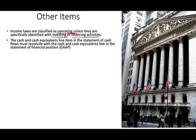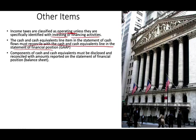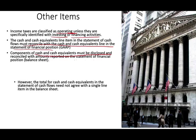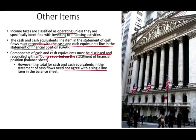The cash and cash equivalent line item in the Statement of Cash Flows must reconcile with the cash and cash equivalent line on the Statement of Financial Position. Under U.S. GAAP, once you are done with the Statement of Cash Flows, it should reconcile with a single line on the balance sheet. Under IFRS, it does not have to reconcile with one item — you might need to add two items on the balance sheet to reconcile. The component of cash and cash equivalent must be disclosed and reconciled with amounts reported on the Statement of Financial Position; however, the total need not agree with a single line on the balance sheet.